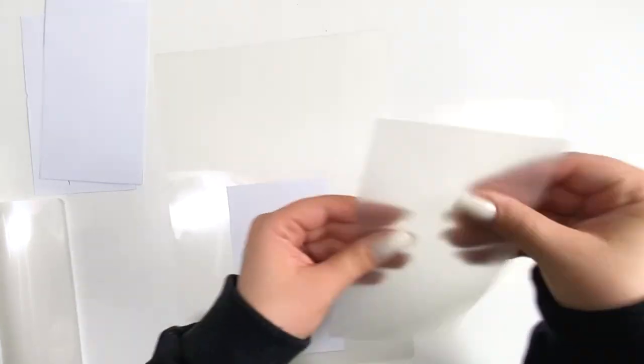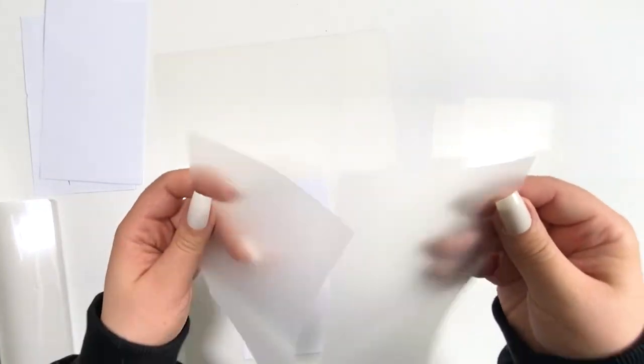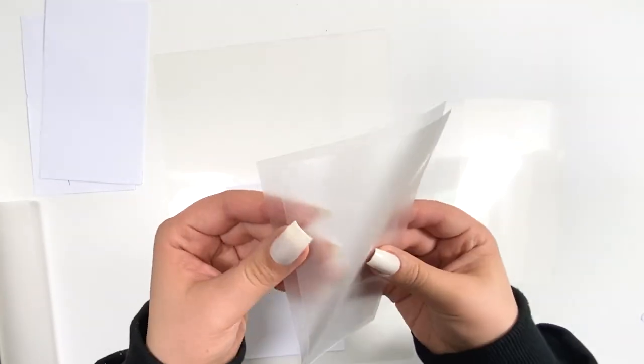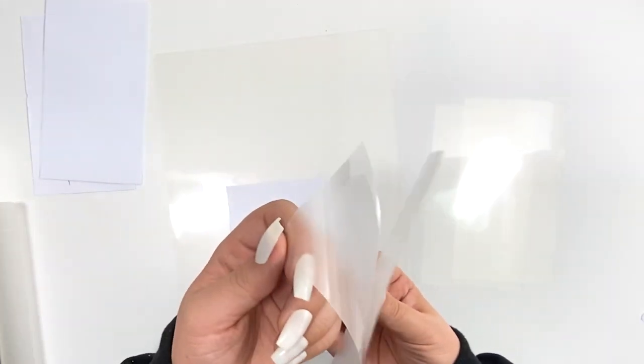I take the laminating sheet which we cut and make sure that you will turn it around because the glossy side should be inside. This glossy side will create the pocket.